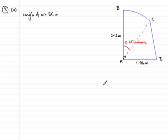So that fraction is going to be 0.65 radians compared with 2π radians for a full turn. And it will be that fraction of the circumference of a circle which is 2π times the radius. And the radius in this example is the length AB or AC which is 2.12 metres.